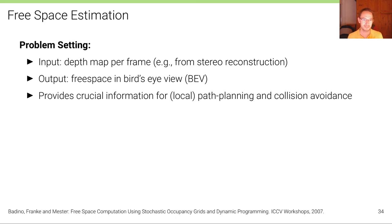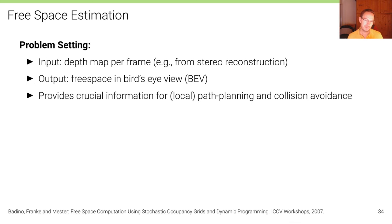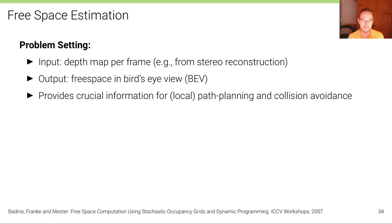The problem setting is as follows: the input is a set of depth maps — one depth map per frame — which could be coming from stereo reconstructions or directly from LiDAR measurements. The output is a free space estimate in bird's-eye view perspective, which provides crucial information for local path planning or collision avoidance.